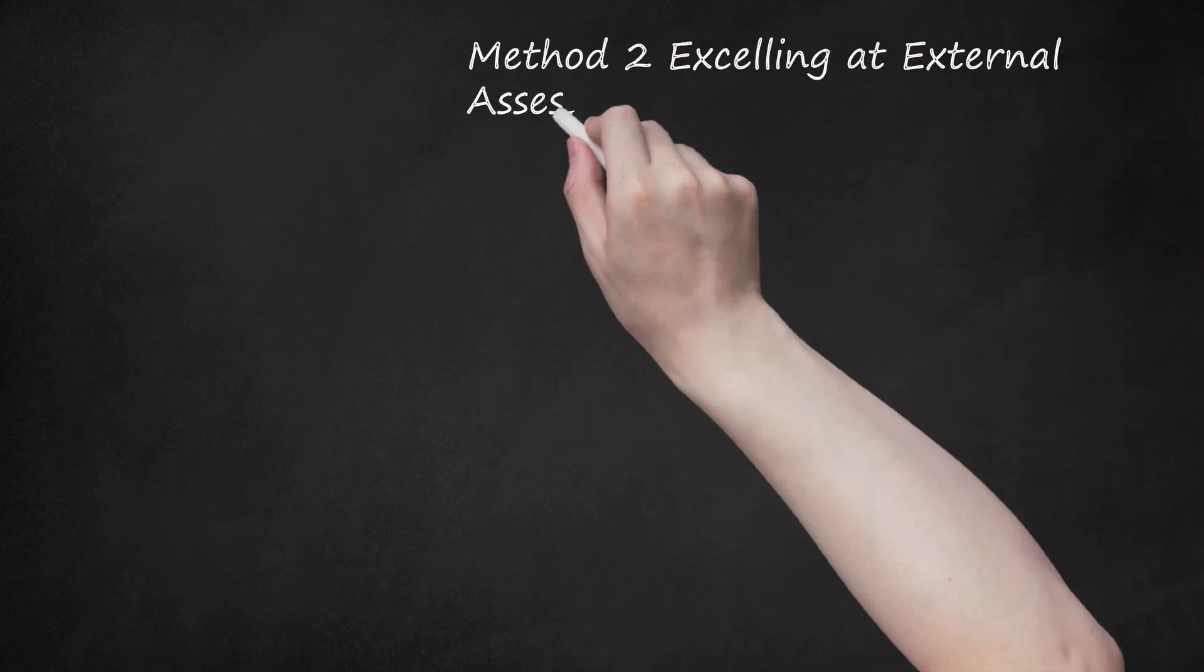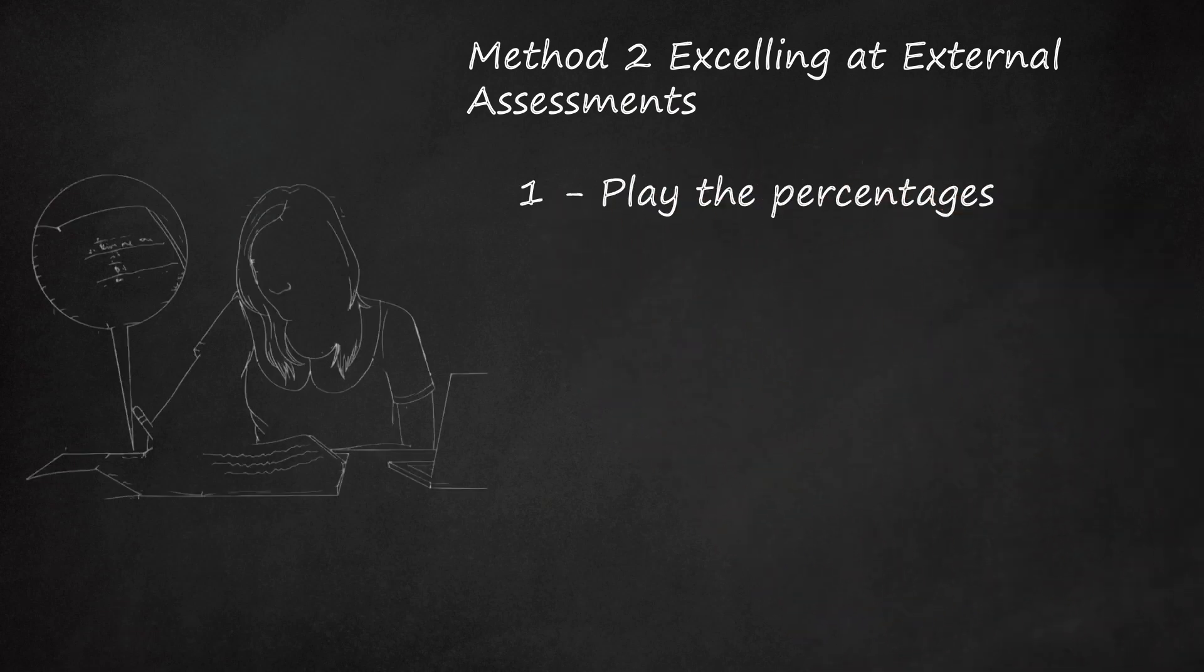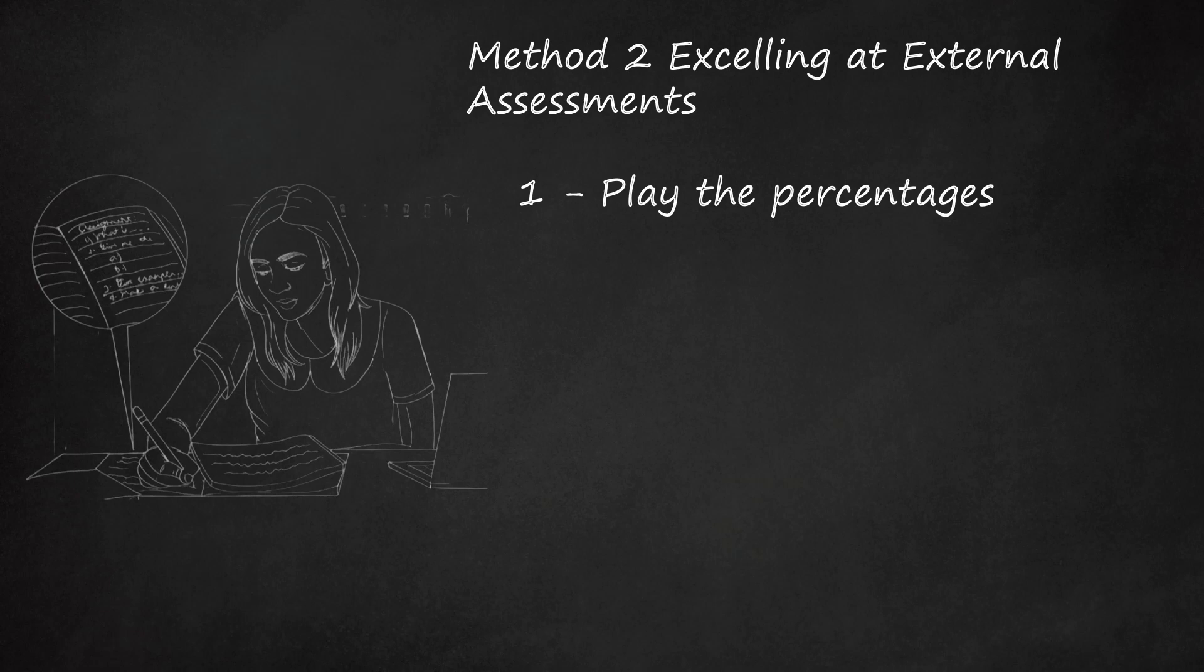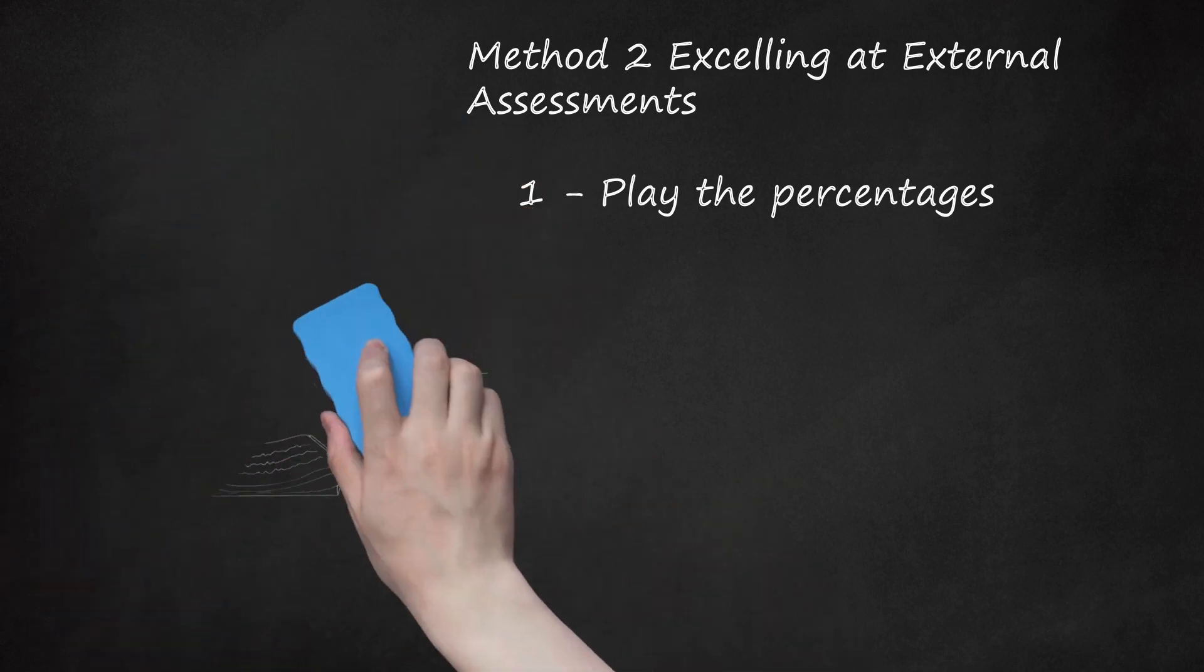Method 2: Excelling at External Assessments. Play the percentages. The external assessment component is worth 70% of your final grade: paper 1, 20%; paper 2, 25%; written assignment, 25%. So naturally it makes sense to dedicate a majority of your preparation time to these assignments. You'll need to excel at both external and internal assessments to earn a 7, but you'll have little chance of a good overall score without doing well with the former. External assessment is labeled as such because the assignments are evaluated by IB assessors off-site, that is, they are sent out to be graded. This means it is more important to be aware of the general expectations for these assignments, and somewhat less essential to be concerned with your teacher's specific points of emphasis.